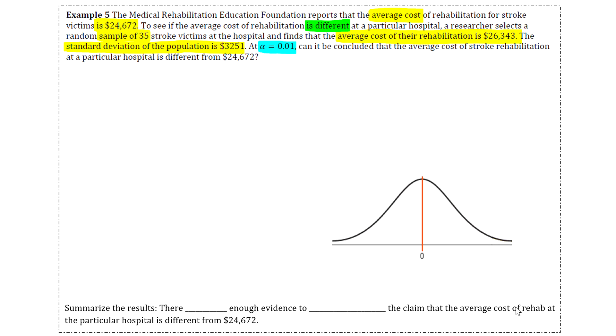Okay, so same five steps. Step one is to state our hypotheses. So our null hypothesis, H₀, will say that μ equals $24,672. And then for your alternative hypothesis, so you'll just kind of read the question again, and here we can see that it says that we are interested in just figuring out if the average cost is different from that. So since it doesn't give a particular direction as far as like greater than or less than or decrease or increase, we're just going to use a not equal to sign. So we'll say that the claim is that μ is not equal to $24,672.